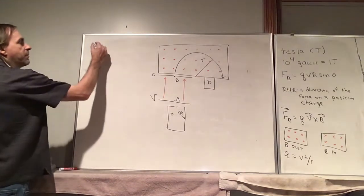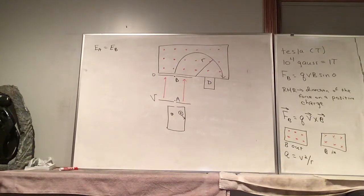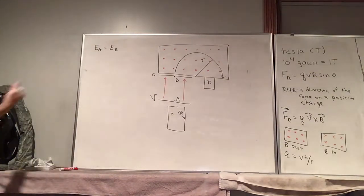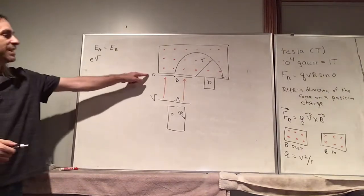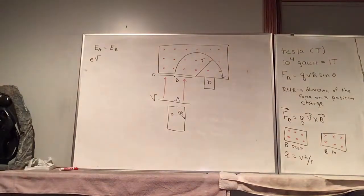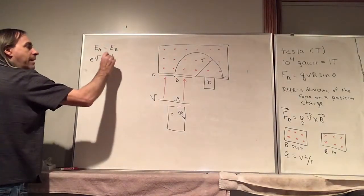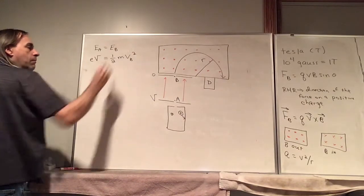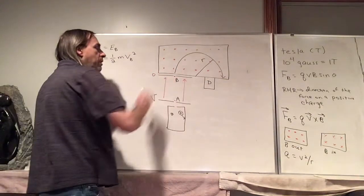Because we're in a vacuum, energy at A equals energy at B. We're ignoring the initial kinetic energy since it's relatively small. The potential energy at A is eV — the charge e times the potential V, since these are singly ionized particles. At B, the potential energy is zero, so we have only kinetic energy: ½mvB². This tells us how fast the particles are moving when they enter the region with the magnetic field.